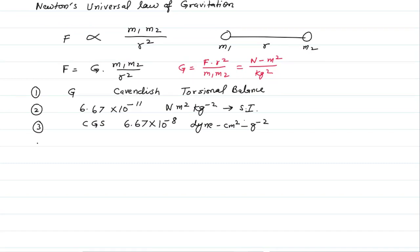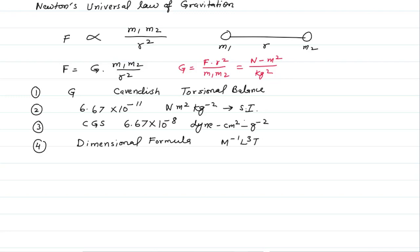The dimensional formula of G is M to the power of minus 1, L cubed, T to the power of minus 2. This is easy to derive: force equals mass times acceleration, which gives M L T to the minus 2, and then distance squared is L squared, divided by mass squared. The masses cancel, giving M to the minus 1, L cubed, T to the minus 2.